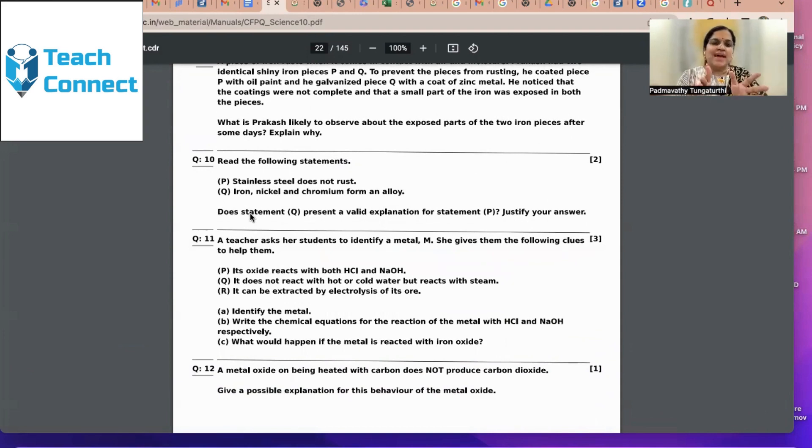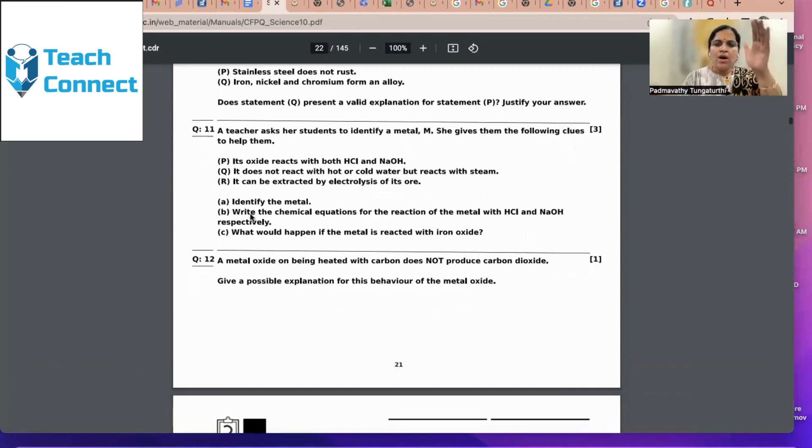If they are sure with the reactivity series, stainless steel does not rust. Iron, nickel, and chromium form an alloy. Does statement Q present a valid explanation for statement P? Yes, because alloys are better resistant to rusting and withering. That's how we are supposed to justify this statement. All the questions depend only on the reactivity series.